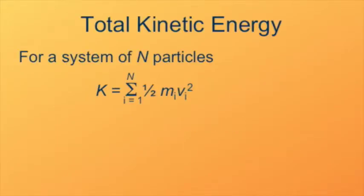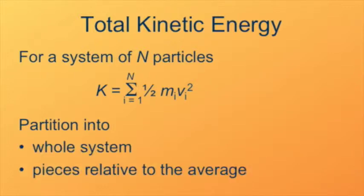To state it formally, the kinetic energy of a system of n particles is just the sum of all n individual particles' kinetic energies. The trick will be to partition it into two pieces: one for the whole system and one for the individual pieces relative to the average, which is the center of mass. We'll show that doing this partitioning gives us the correct result, that they're interchangeable.